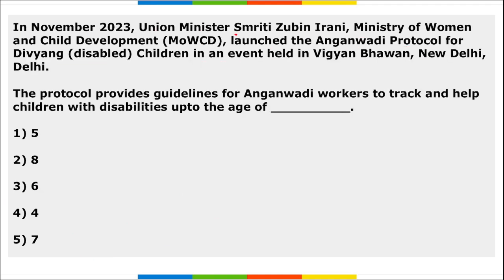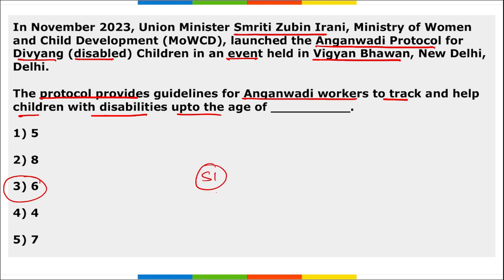Next: Union Minister Smriti Irani of the Ministry of Women and Child Development launched the Anganwadi Protocol for Divyangan — disabled children — at an event held in Vigyan Bhavan, New Delhi. The protocol provides guidelines for Anganwadi workers to track and help children with disabilities up to the age of six years, providing them guidance, educational support, and proper nutrition on a regular basis.